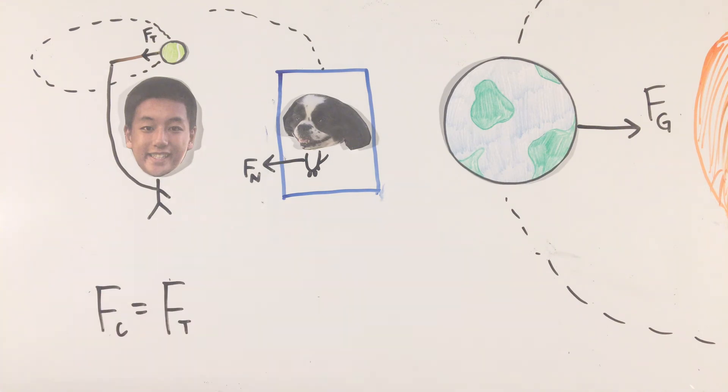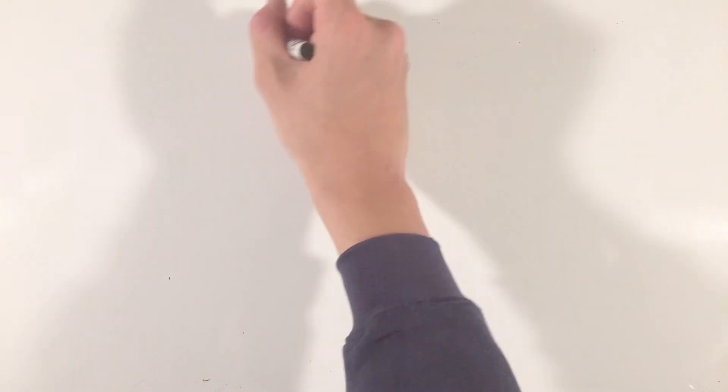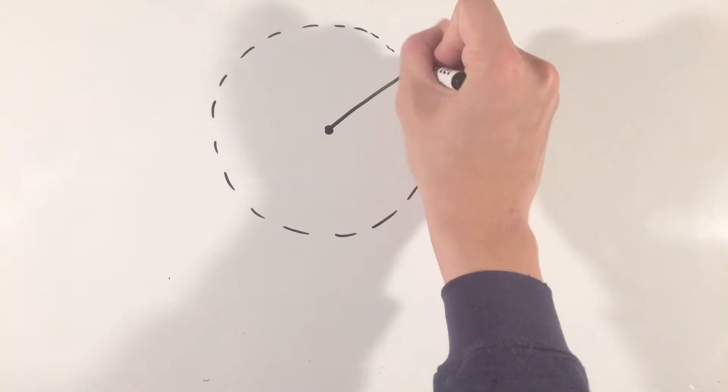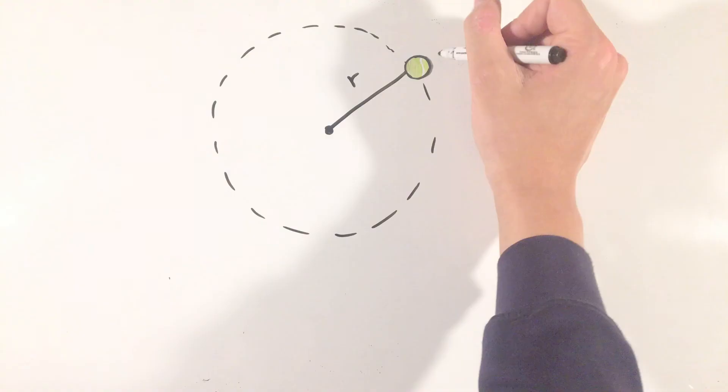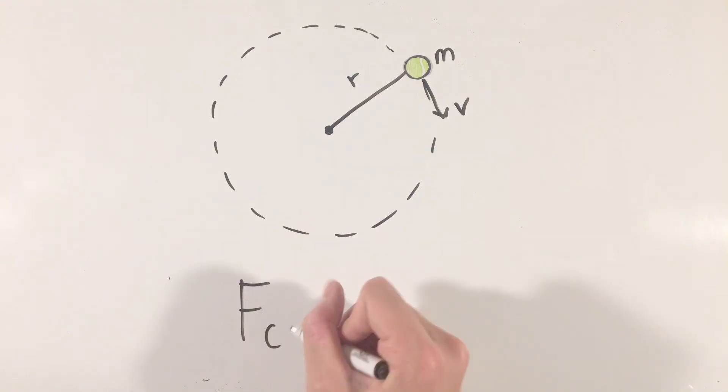Once you determine what type of force is providing this centripetal force, equate the two force equations to solve for unknown quantities like the velocity or radius. While you may receive multiple different scenarios like planets orbiting or cars rounding turns, they will always involve the exact same ideas of uniform circular motion, so stick to these fundamental formulas and concepts.